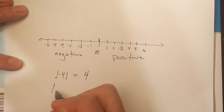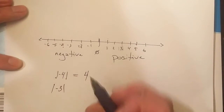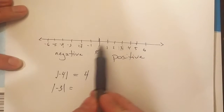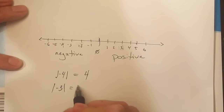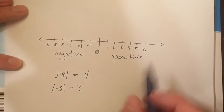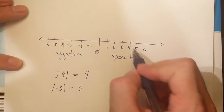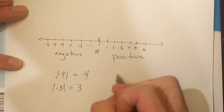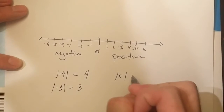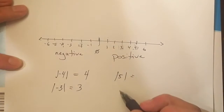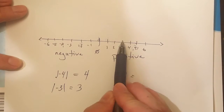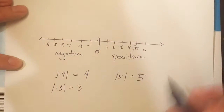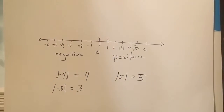The absolute value of negative three — remember, absolute value means the distance from zero — so negative three is one, two, three: a distance of three. And the same thing with positives. What is the absolute value of five? Absolute value means the distance from zero, and five has a distance of one, two, three, four, five. Five has a distance of five.